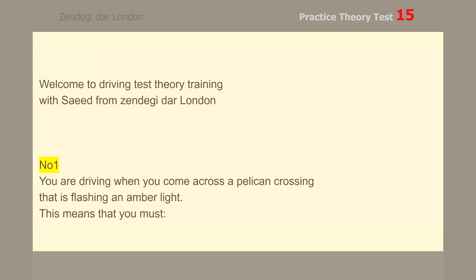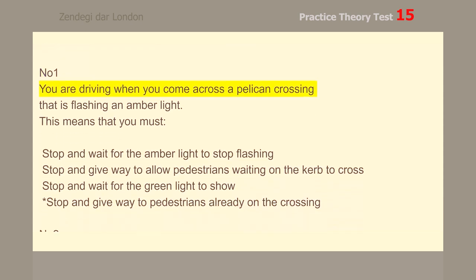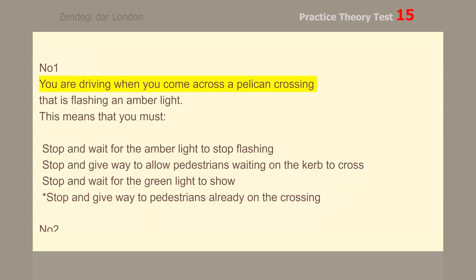Number 1. You are driving when you come across a pelican crossing that is flashing an amber light. This means that you must stop and give way to pedestrians already on the crossing.